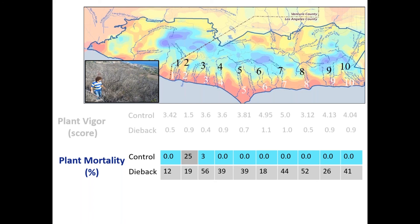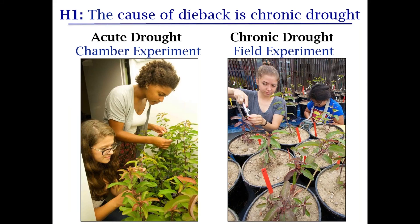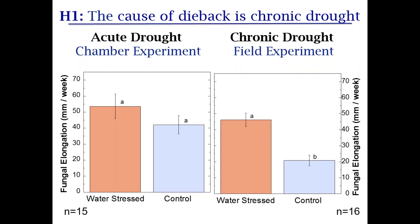Plant fitness: dieback plants have few flowers, controls have many — this disease impacts flowering time and percent flowering. We also tested acute drought versus chronic drought in chamber experiments. Acute drought lasting about one month showed little impact on fungal elongation in tissue. But chronic drought lasting about three months showed much higher fungal elongation rates in Malosma laurina compared to the irrigated control. The chronic scenario is the real challenge.